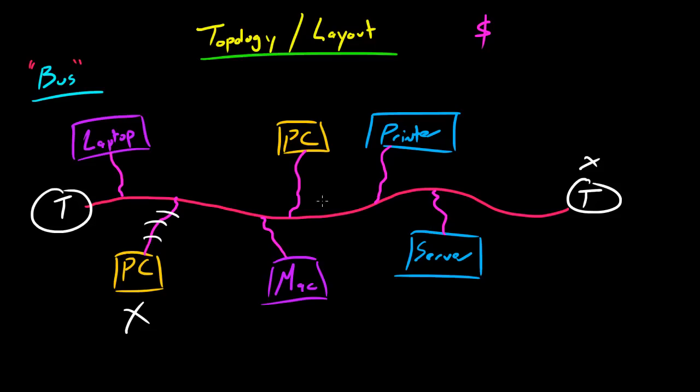If you guys know, whenever you send out a signal, say the PC right here wants to request something from the server, it sends it out along this cable right here. But since there aren't any smart devices, which we're going to be talking about later on, this signal is going to go to every single node or every single one of these devices.